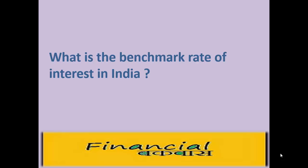Every year the government issues a new gilt of 10-year maturity, because after one year, as the maturity date comes closer, a 10-year gilt would have a residual life of only 9 more years, and the yield on the same gilt cannot reflect the 10-year yield. The benchmark yield is available on the RBI website.